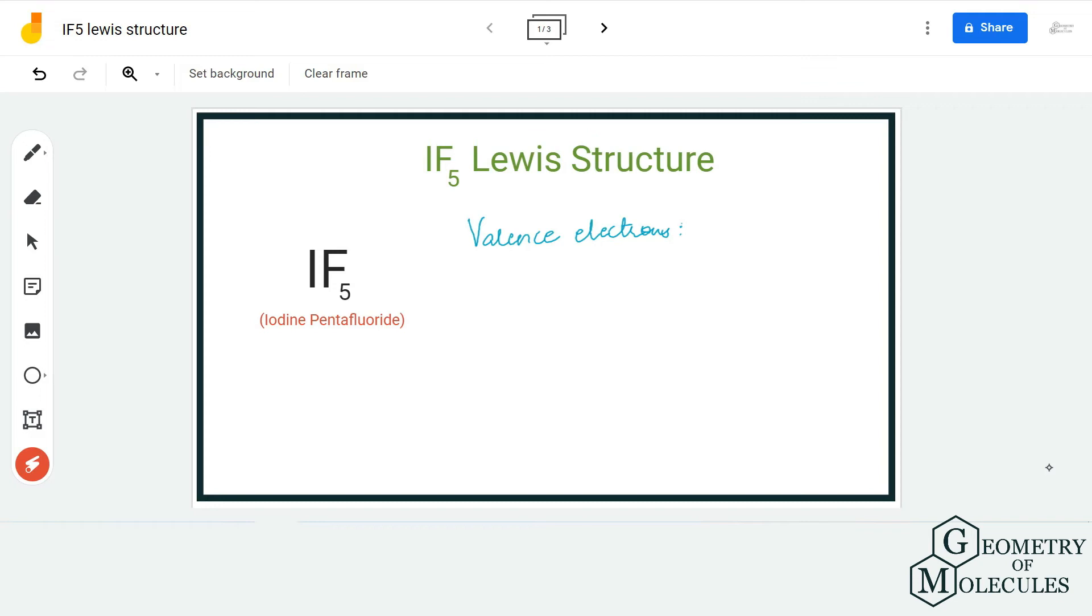Hi guys, welcome back to our channel. In today's video, we are going to determine the Lewis structure for IF5 molecule. It is the chemical formula for iodine pentafluoride because there are five fluorine atoms involved in the structure.